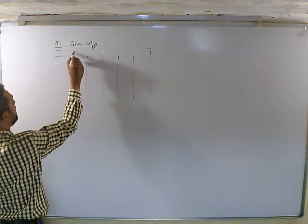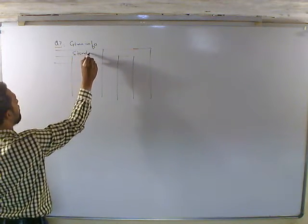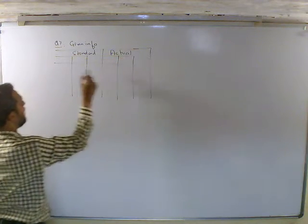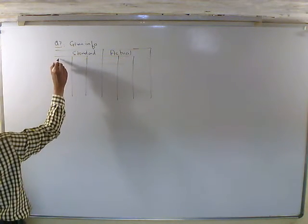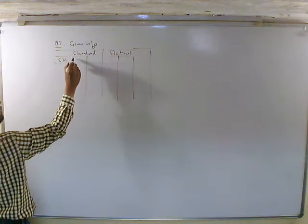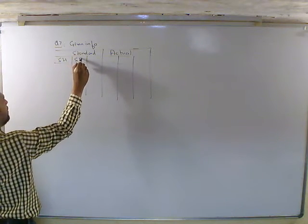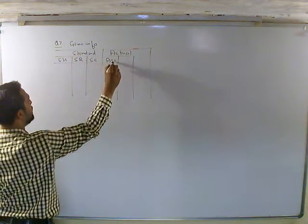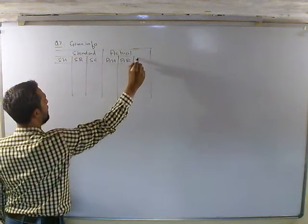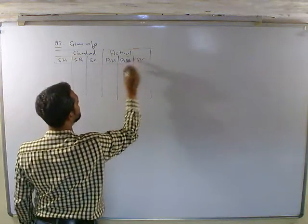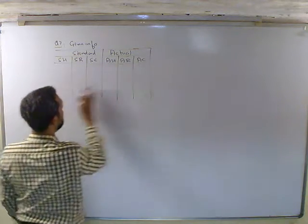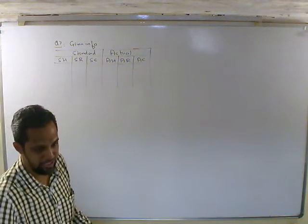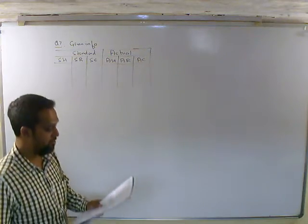यहाँ पर हमारा standard और यहाँ पर मेरा actual. Standard के columns हैं: hours, rate, cost. Actual के columns हैं: hour, rate, cost. इसमें एक ही section दिया है, ज़्यादा break-up नहीं है.